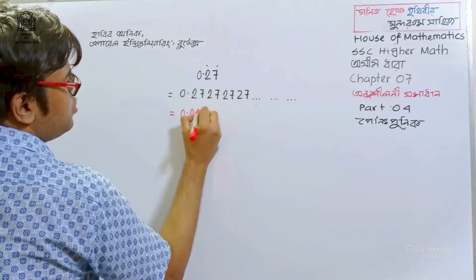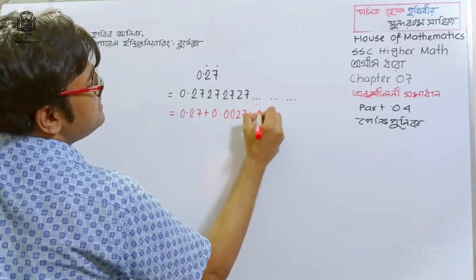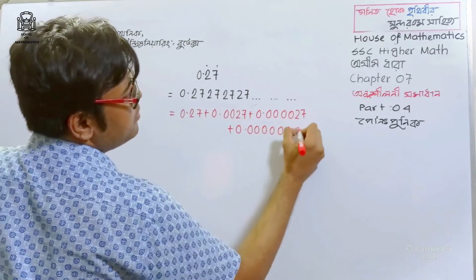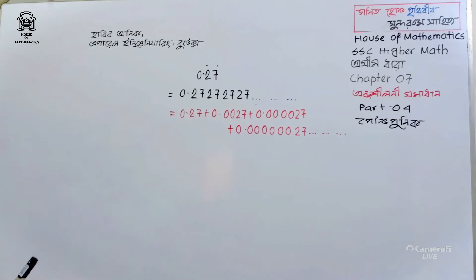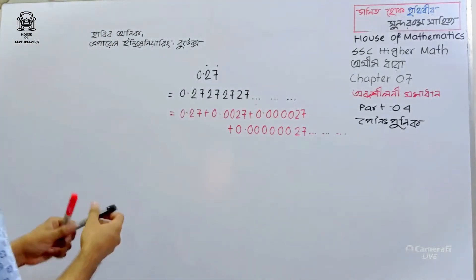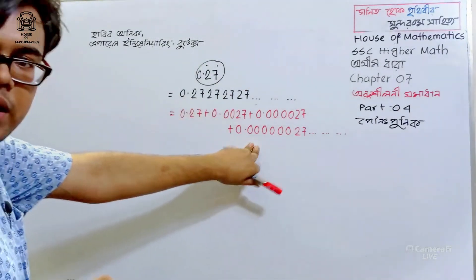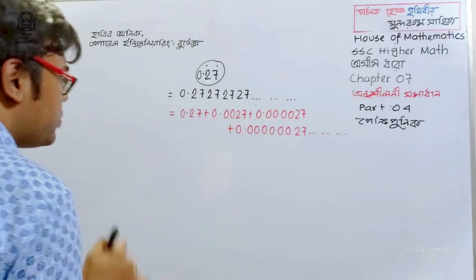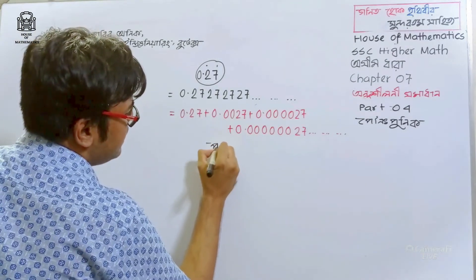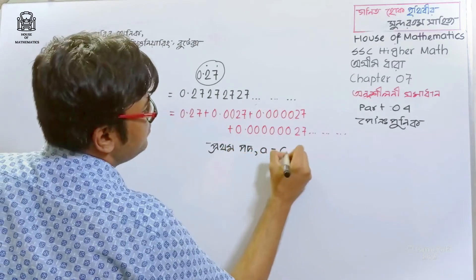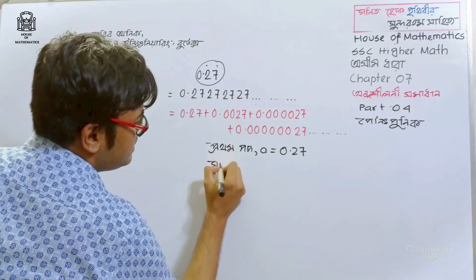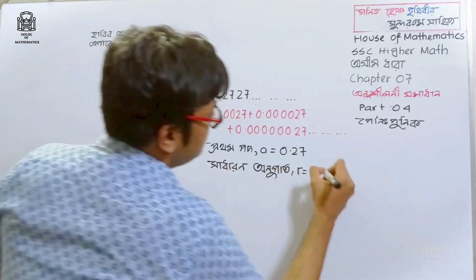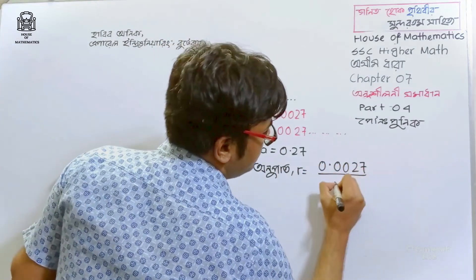0.27 plus 0.0027 plus 0.000027 plus 0.000027 — and this is right. A is equal to 0.27. A is equal to 0.0027 over 0.27.